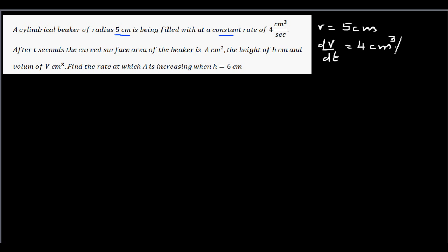The next line says: after t seconds, the curved surface area of the beaker is A, the height is H, and the volume is V. So you have three things: A, V, and H. The question asks you to find the rate at which the curved surface area A is increasing when the height is 6 cm — that is, find dA/dt when H = 6 cm.